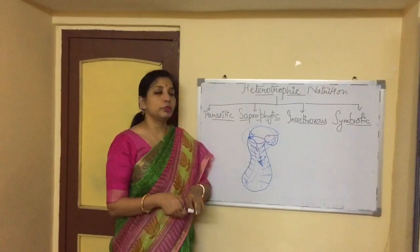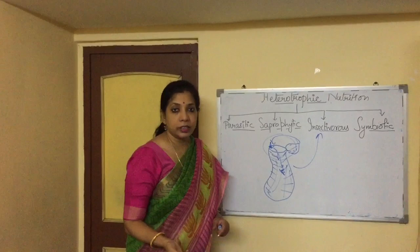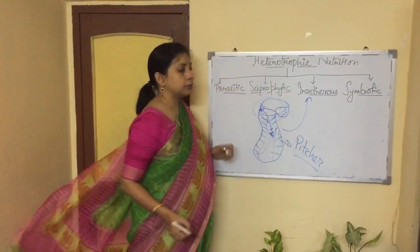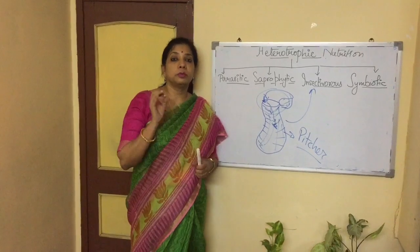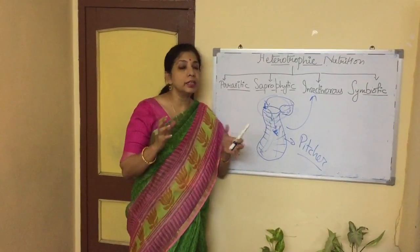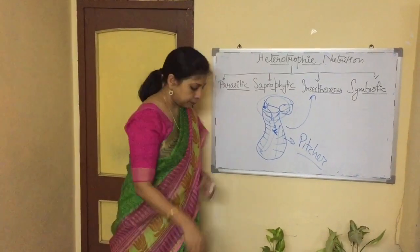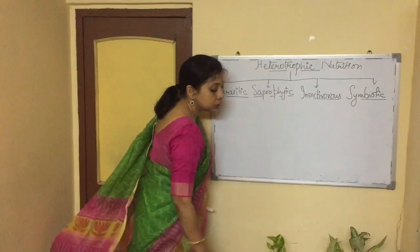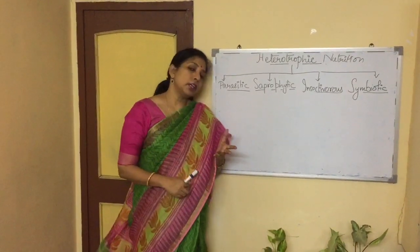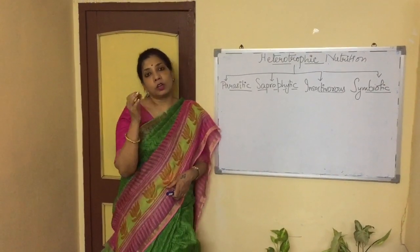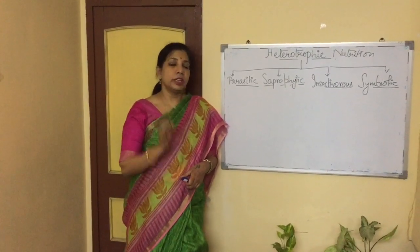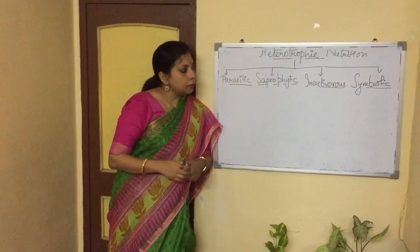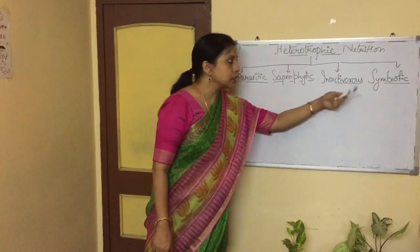So we call them insectivorous plants. Examples are Drosera and Nepenthes, the pitcher plant, named so because the leaf has taken the shape of a pitcher. Now, nitrogen is 78% available in the atmosphere, so why can't plants use it? Because plants cannot absorb nitrogen as it is — they can only absorb it in the form of nitrates and nitrites.